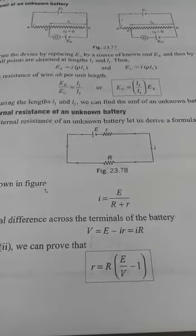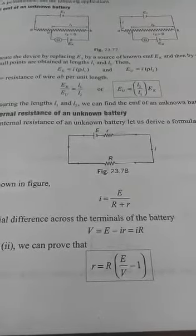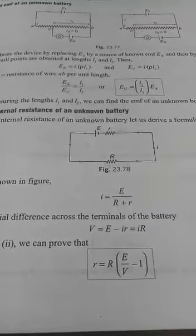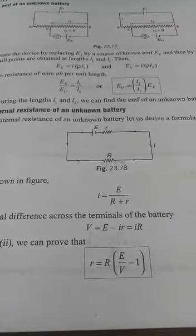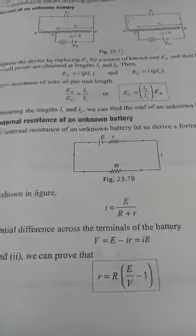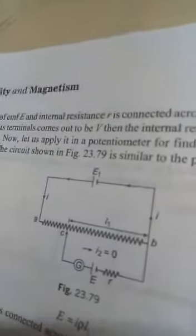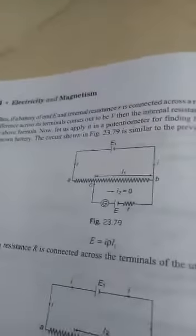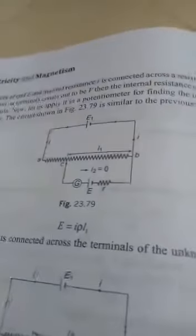The small r is the internal resistance. So this E by V value, if we can find out, we can find the value of small r. So for that, what we do is we take a circuit.